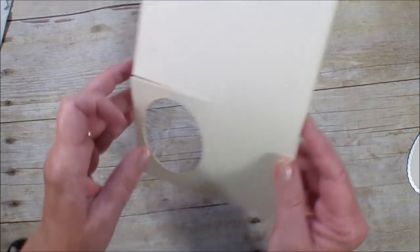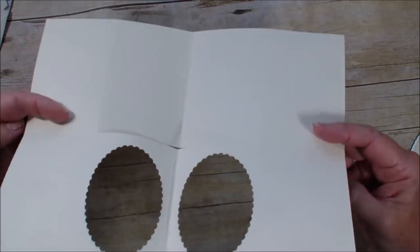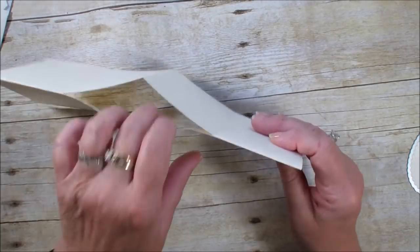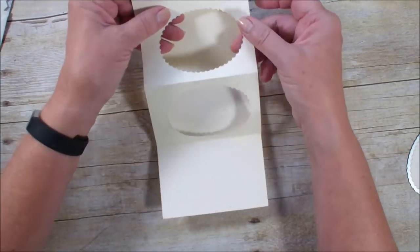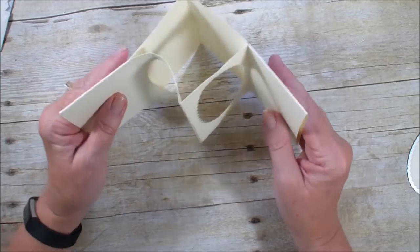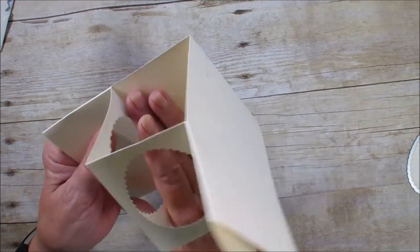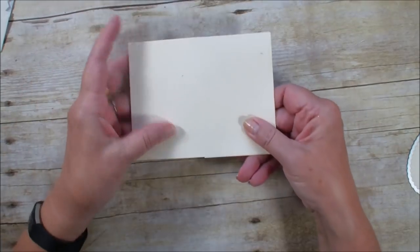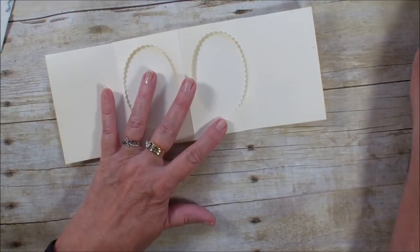And then what you have is your card, like so. Let's move our score lines back and forth. And so there you have it. Your card is all made out of an 8 1/2 by 11 sheet of cardstock. Isn't that fun? Of course, you're going to tape these sides down.